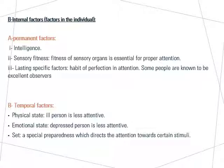The internal factors are related to us and can be permanent or temporal. Permanent factors include our intelligence, our sensory fitness — like sensory organs, ears, eyes, how we smell — or a lasting specific factor like a habit of perfection in attention, which makes some people excellent observers. Temporal factors can be our physical state, like having an illness, or emotional state such as being depressed or anxious. Also our 'set' — sometimes we prepare ourselves to perceive something, and this preparation affects how we see or perceive stimuli.